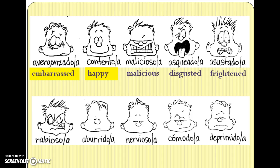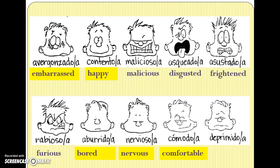In the fourth row: rabioso means furious — it looks like 'rabid,' and something that's rabid we describe as mad. Aburrido means bored — you do need to know that one. Try to roll the R's. If you ate burritos every day, you'd be bored with that — that's how to remember it. Nervioso is a cognate meaning nervous. Cómodo means comfortable — not really a cognate for the whole word, but remember there's an accent over the O. And deprimido is a cognate for depressed.